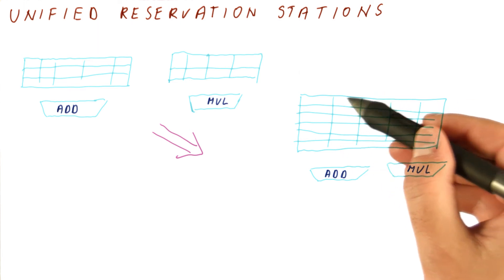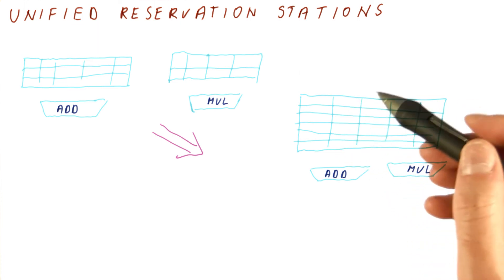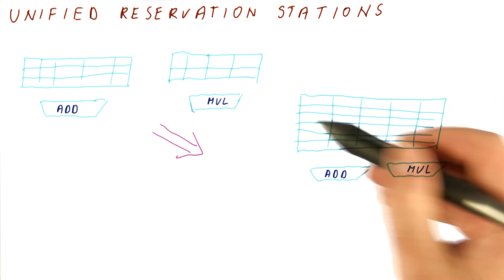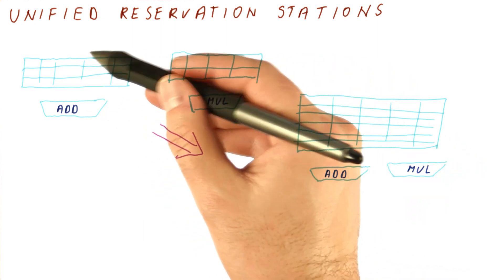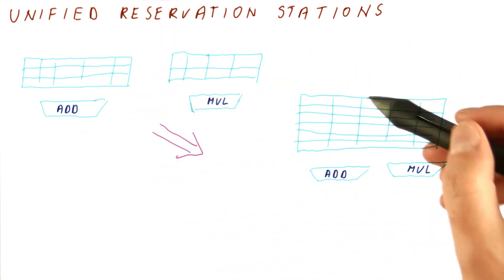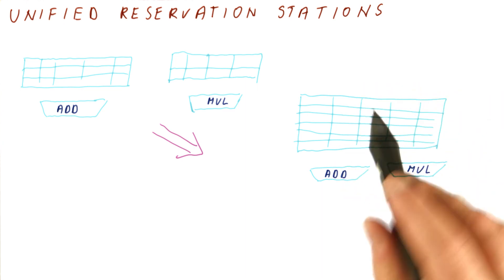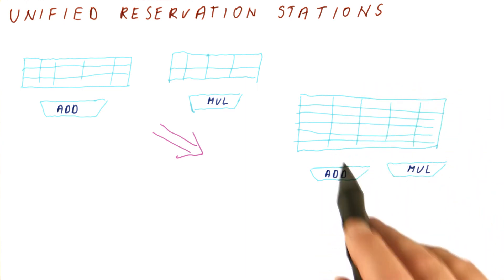But again, reservation stations are very, very expensive. So usually, processors will use some variant of this organization rather than this one. Basically, we don't have each unit having its own reservation stations. Typically, a group of units will have a reservation station so that we can benefit from our reservation stations if we have them.